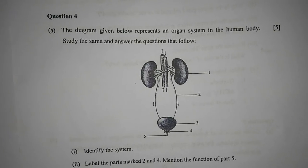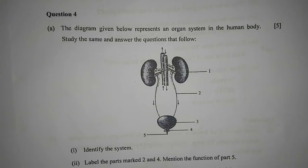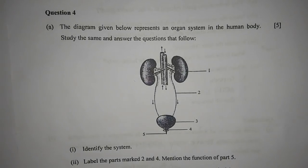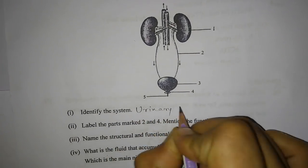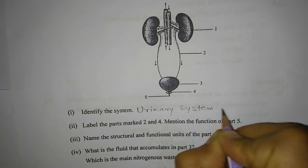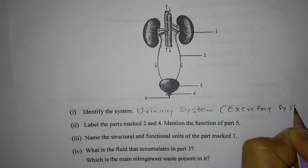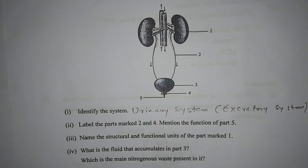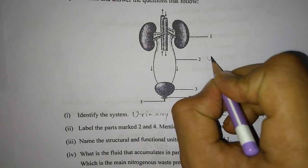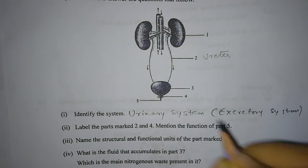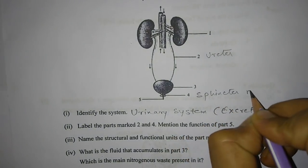Question 4a: The diagram represents an organ system in the human body. Number one — identify the system. It is the urinary system or excretory system. Number two — label parts marked 2 and 4. Part 2 is the ureter and part 4 is the sphincter muscle.